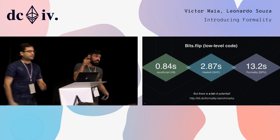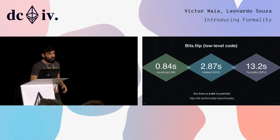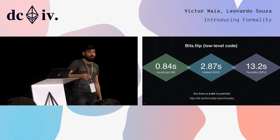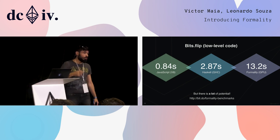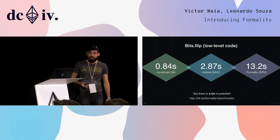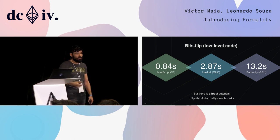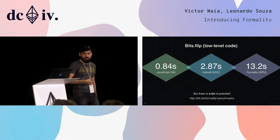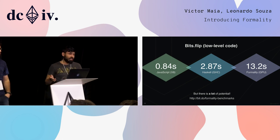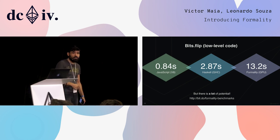This is the same code now running on the GPU. You can take any Formality program and run it on thousands of cores in parallel with no programmer effort at all, and you can get real speed-ups with that. This is something no other functional language in the world is capable of doing — you can't compile Haskell, Idris, or anything like that to the GPU, and Formality can do that. We believe that with a sufficiently mature compiler, we could beat those languages.